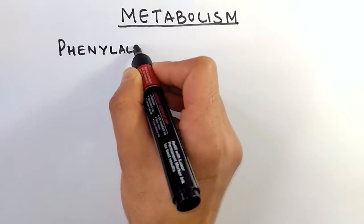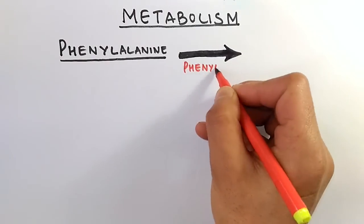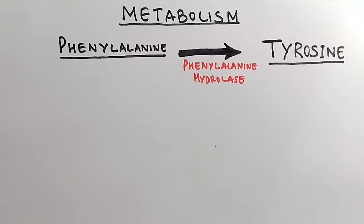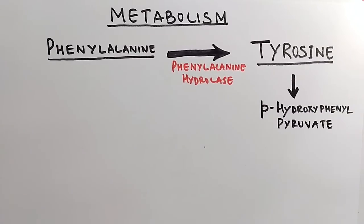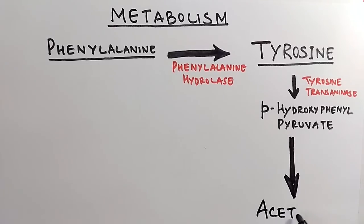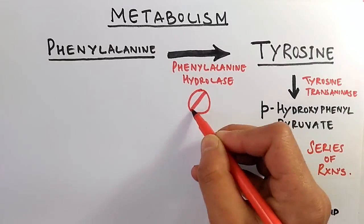In the normal pathway, in the presence of phenylalanine hydroxylase, phenylalanine gets converted into tyrosine. The tyrosine, in the presence of tyrosine transaminase, gets converted into hydroxyphenylpyruvate, and then through a series of reactions, this hydroxyphenylpyruvate gets ultimately converted to acetic acid.